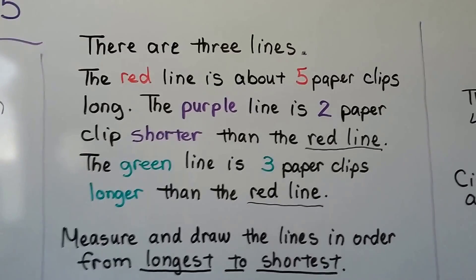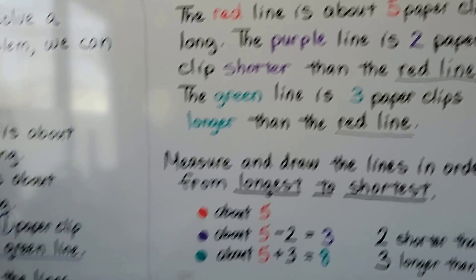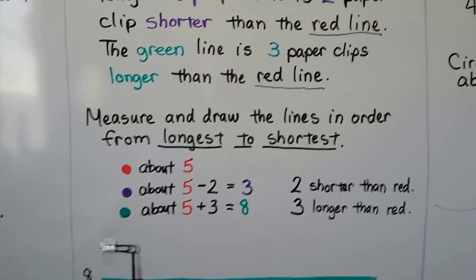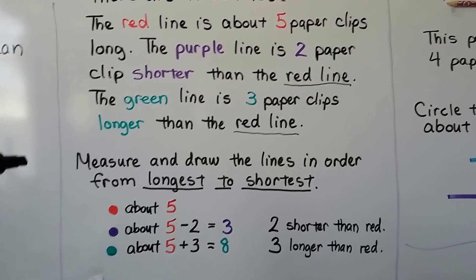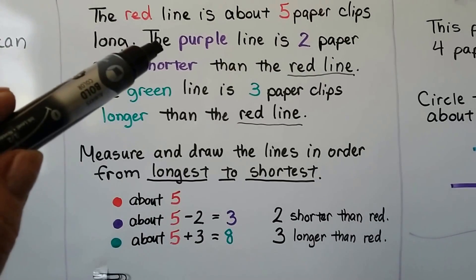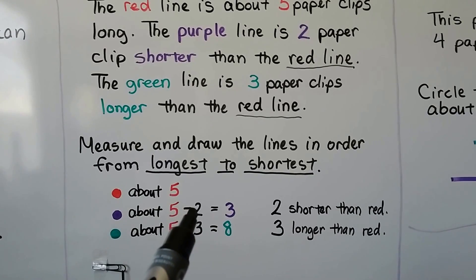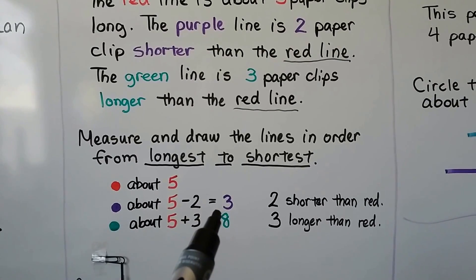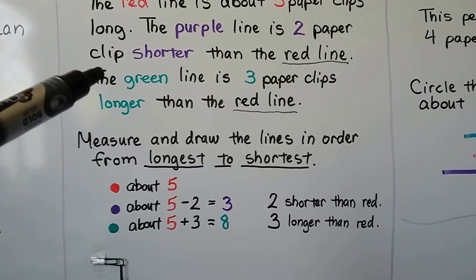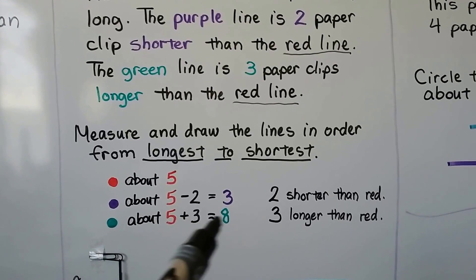Both the green and the purple lines are being compared to the red line. We know the red line is 5 paperclips long. We need to measure and draw the lines in order from longest to shortest. The red one is about 5. The purple one is 2 shorter than the red — 5 minus 2 — so the purple one is about 3. The green line is 3 longer than the red. The red is 5, so 3 more would be 8.